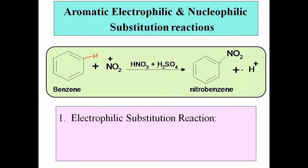Consider benzene treated with concentrated HNO3 and H2SO4 — the nitrating mixture. H2SO4 reacts with nitric acid to form the nitronium ion NO2+. In this reaction, hydrogen is replaced by NO2+, which is a positively charged electrophile — an electron-deficient species. Since the substitution is initiated by the attack of an electrophile, this is called an electrophilic substitution reaction.